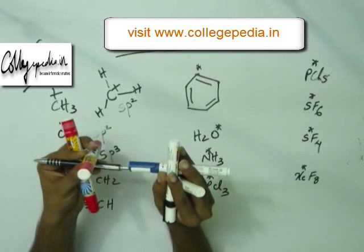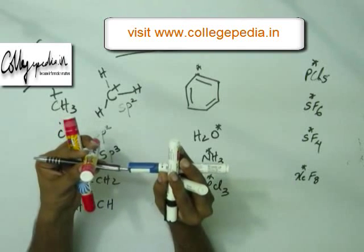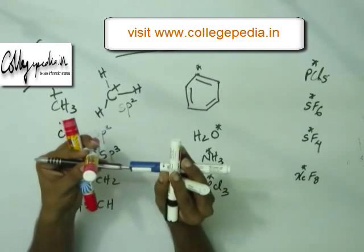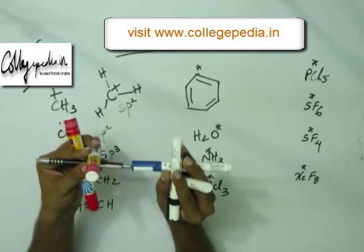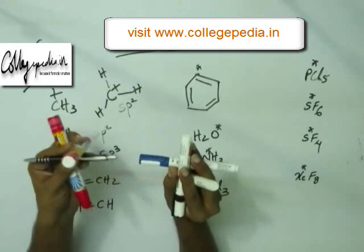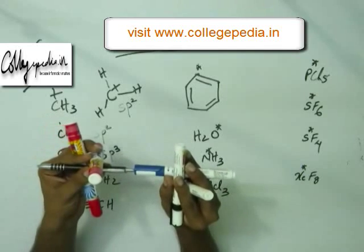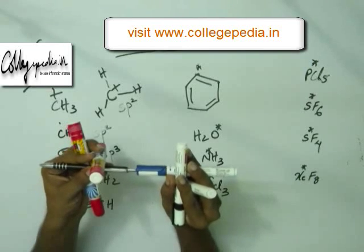Suppose the next pi bond is formed between two vertical orbitals that is sideways. The third bond is formed between two horizontal orbitals that will also be sideways because these two orbitals which are horizontal are also parallel to each other. Once you have head-on overlap, the next has to be pi, the third has to be pi. The fourth bond cannot be formed because you do not have a fourth p orbital.